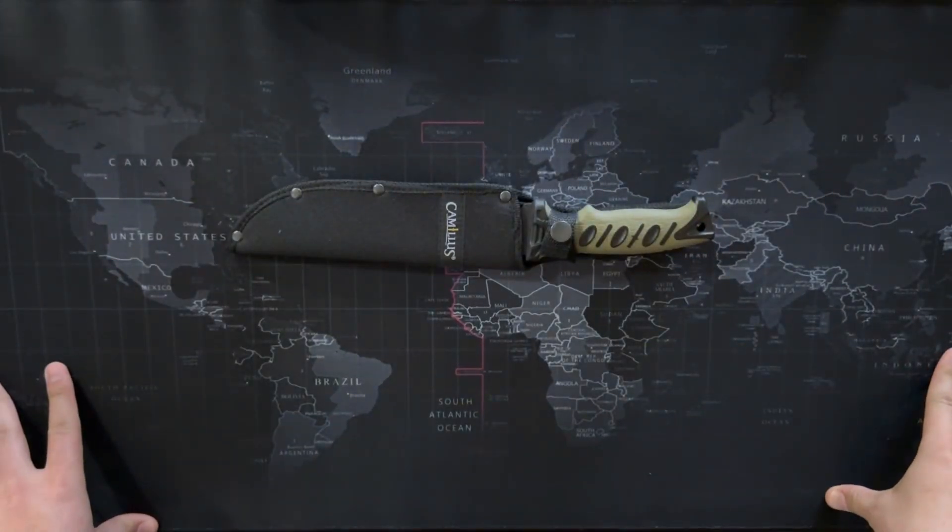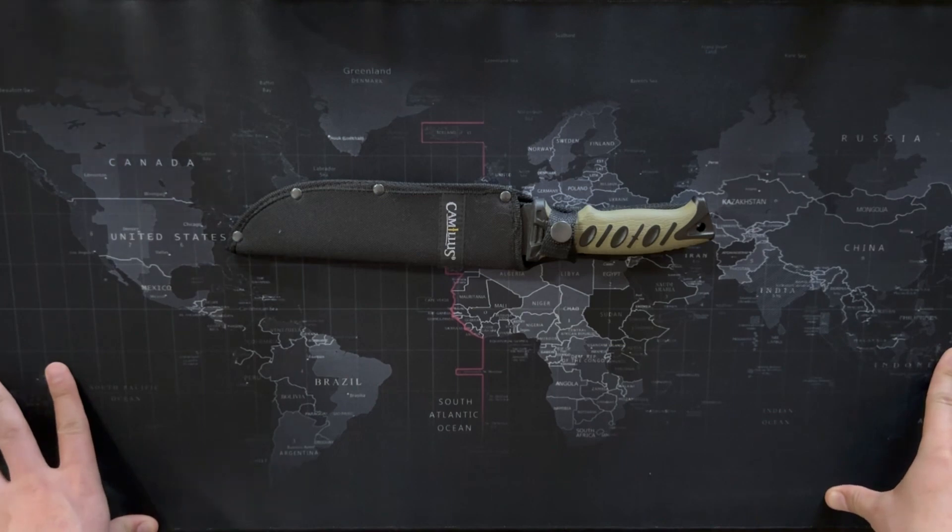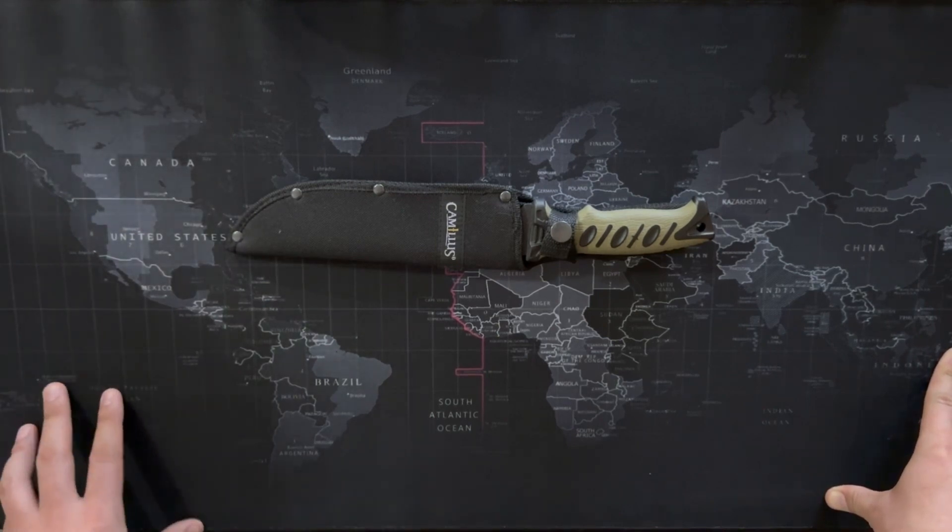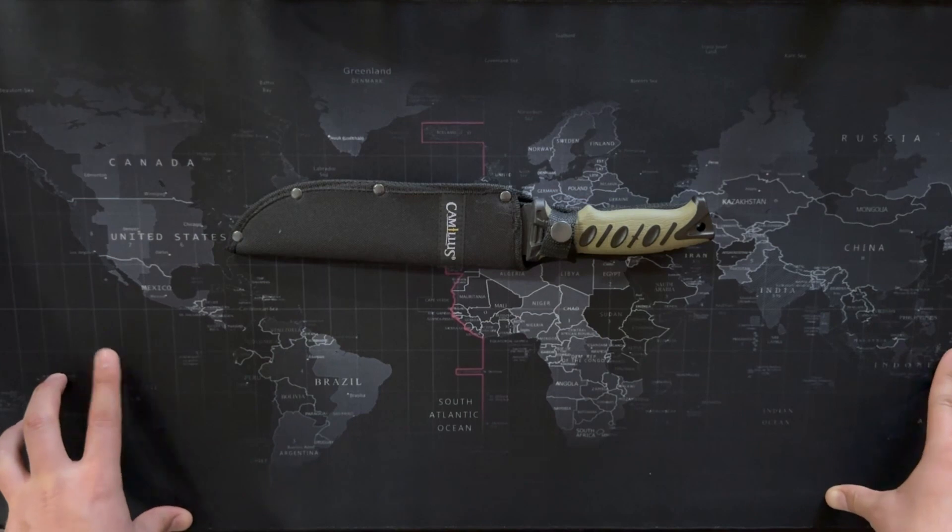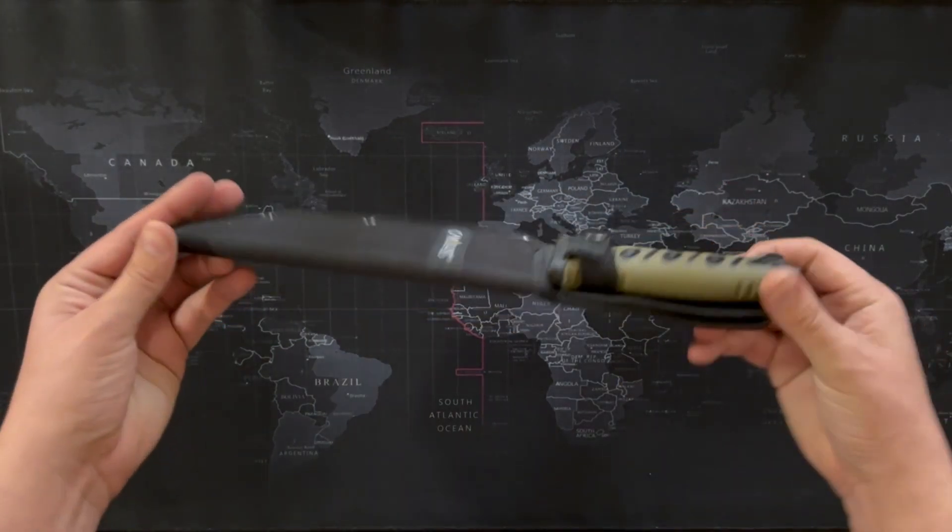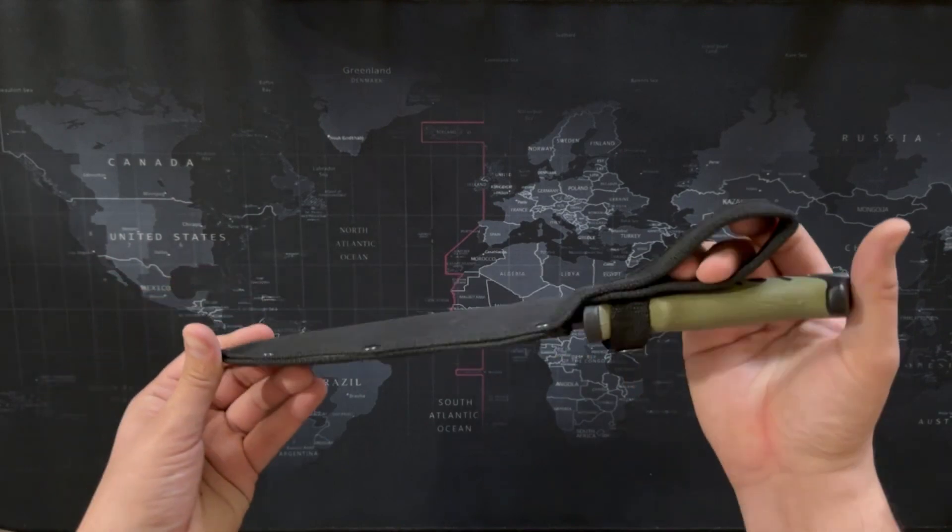This is a Camelus 12.5 inch survival knife. We picked this up in a pack along with the Camelus 5.7 inch fixed blade and it came with a compass and some stuff like that as well. Demo will be linked below. We're just going to talk about our first impressions of this before we get to go use it.